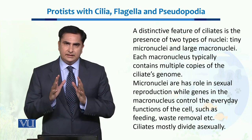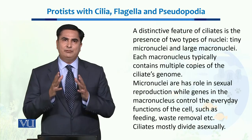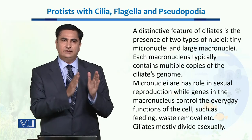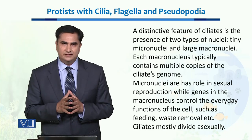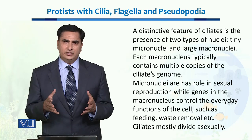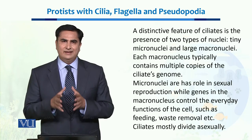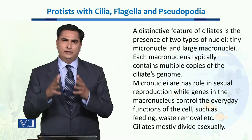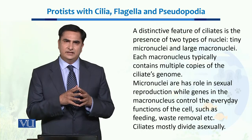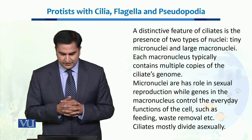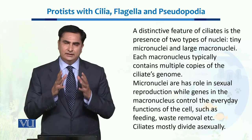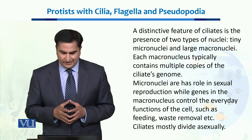The distinctive features of the ciliates are the presence of two nuclei. One is called the micronucleus and the other is called the macronucleus. While the micronucleus is responsible for the reproduction of that organism, the macronucleus is responsible for metabolism and other regulatory systems of their bodies. Both of the nuclei contain genes for the synthesis of these cilia.